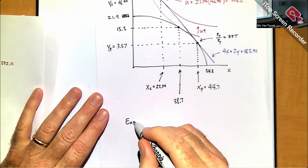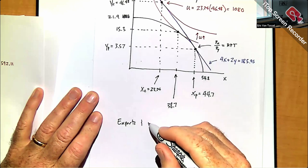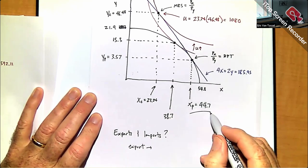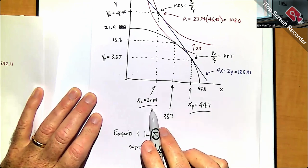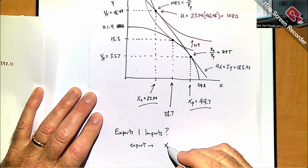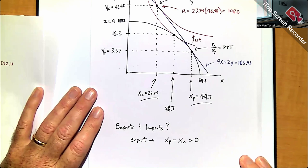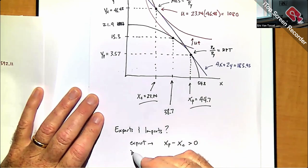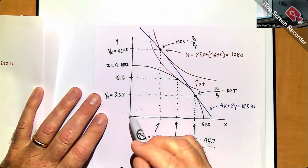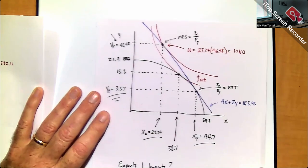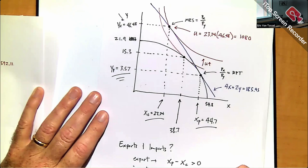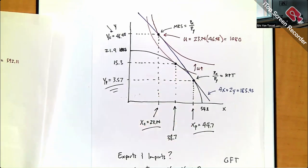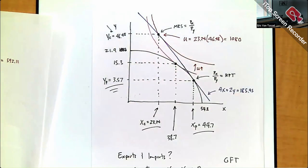We can also identify exports and imports. The country produces 44.7 units of X but only consumes 23.24, so it exports X (XP − XC > 0). For Y, it produces only 3.57 but consumes 46.48, so it imports Y (YC − YP > 0). The country is a net exporter of X and a net importer of Y, and clearly gains from trade since it's on a higher indifference curve. Changing prices just requires readjusting the production and consumption decisions.